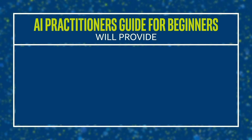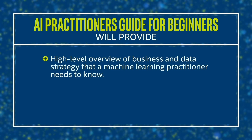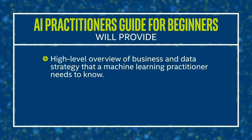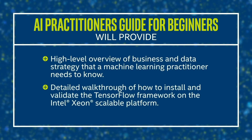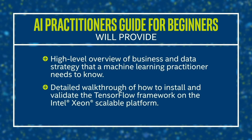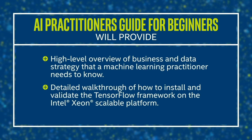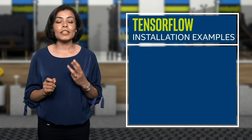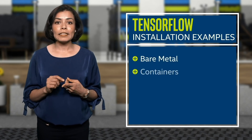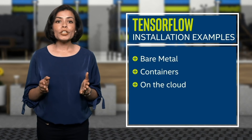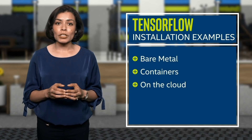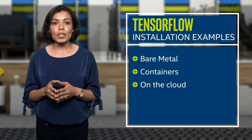The AI Practitioner's Guide for Beginners will provide you with a high-level overview of business and data strategy that a machine learning practitioner needs to know, followed by a detailed walkthrough of how to install and validate one of the popular artificial intelligence frameworks, TensorFlow, on the Intel Xeon Scalable Platform. The guide details the steps for installing and running TensorFlow framework and examples in three different ways — bare metal, containers, or on the cloud — so you can choose to try one or all three options of deployment, and then make an educated decision as to which option makes sense for your business.